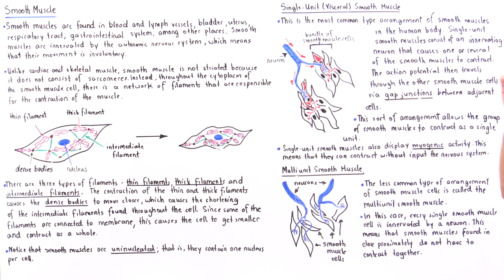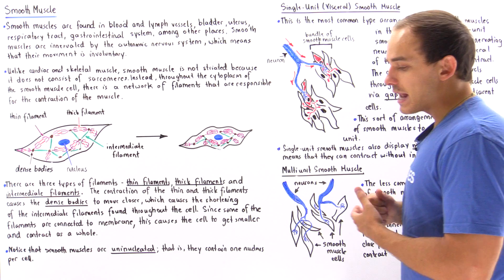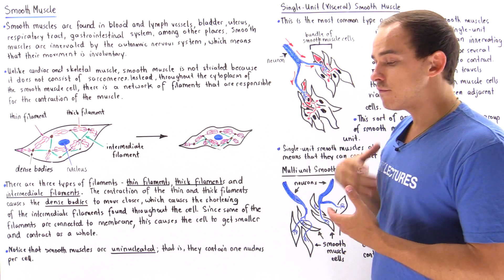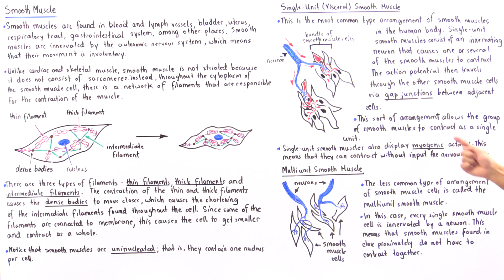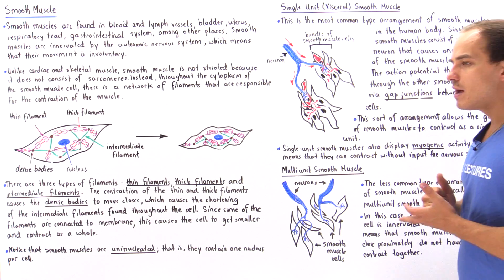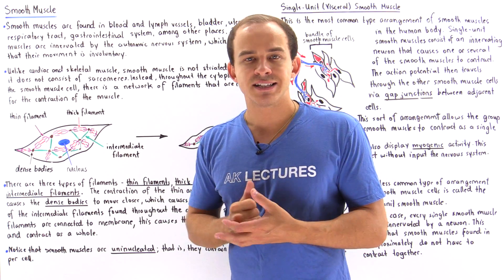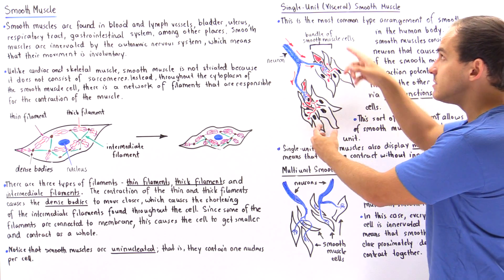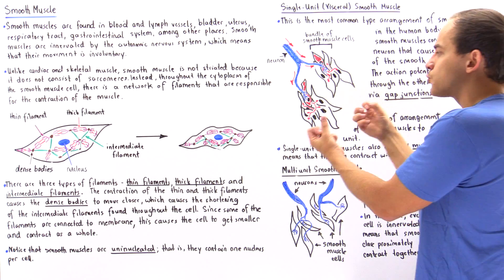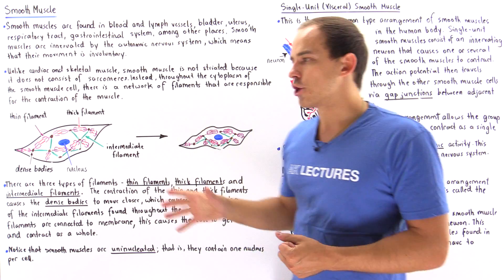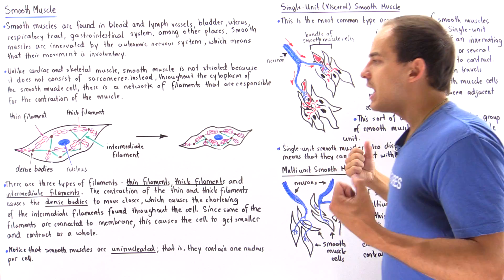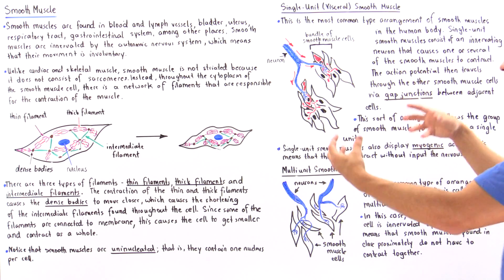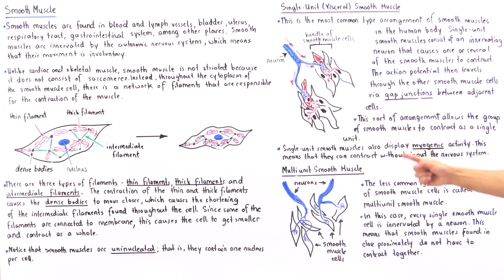Just like certain cardiac cells display myogenic activity, single unit smooth muscles can also exhibit myogenic activity. This means these cells can contract without input from the nervous system — even without receiving a signal from the nervous system, these cells can contract independently.